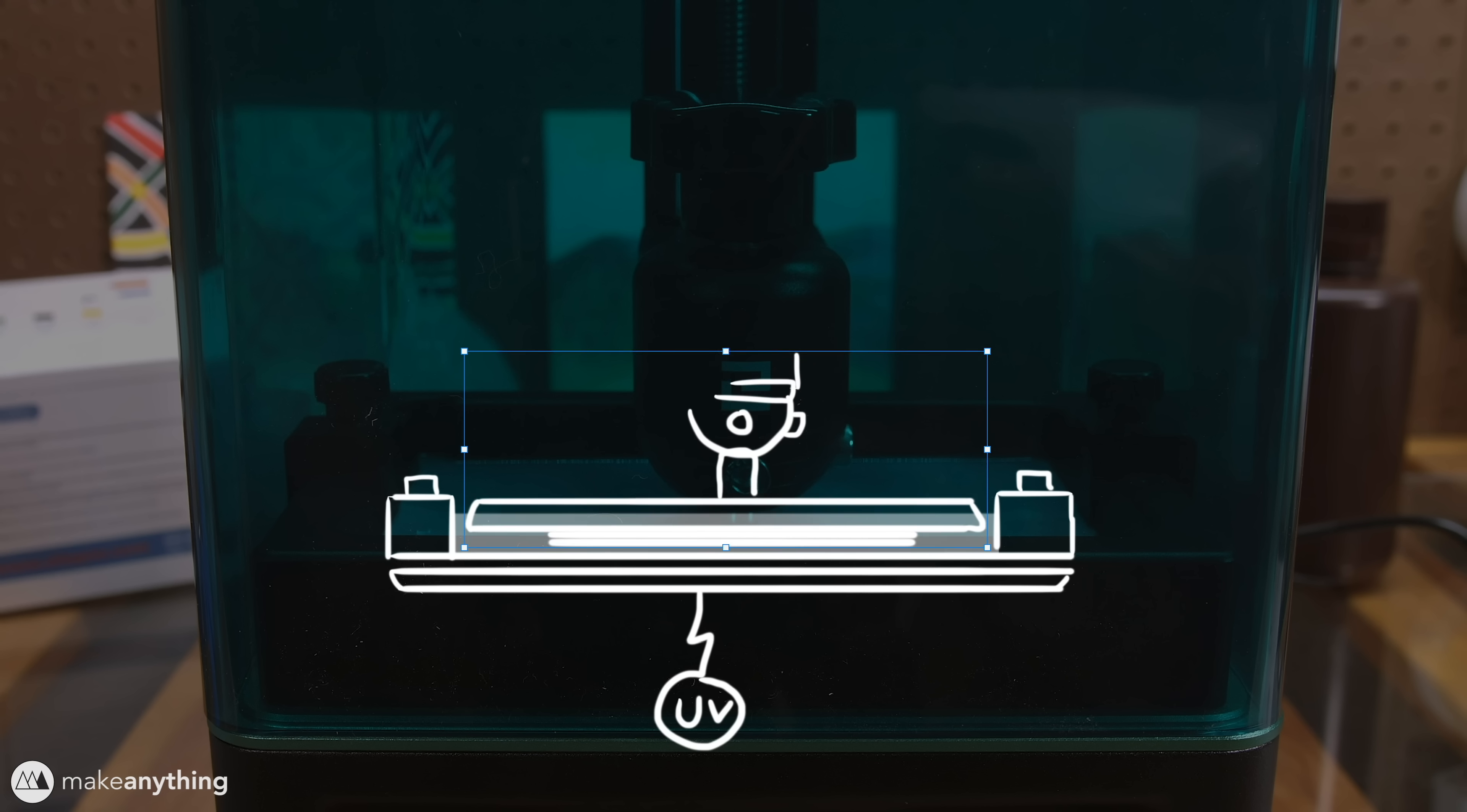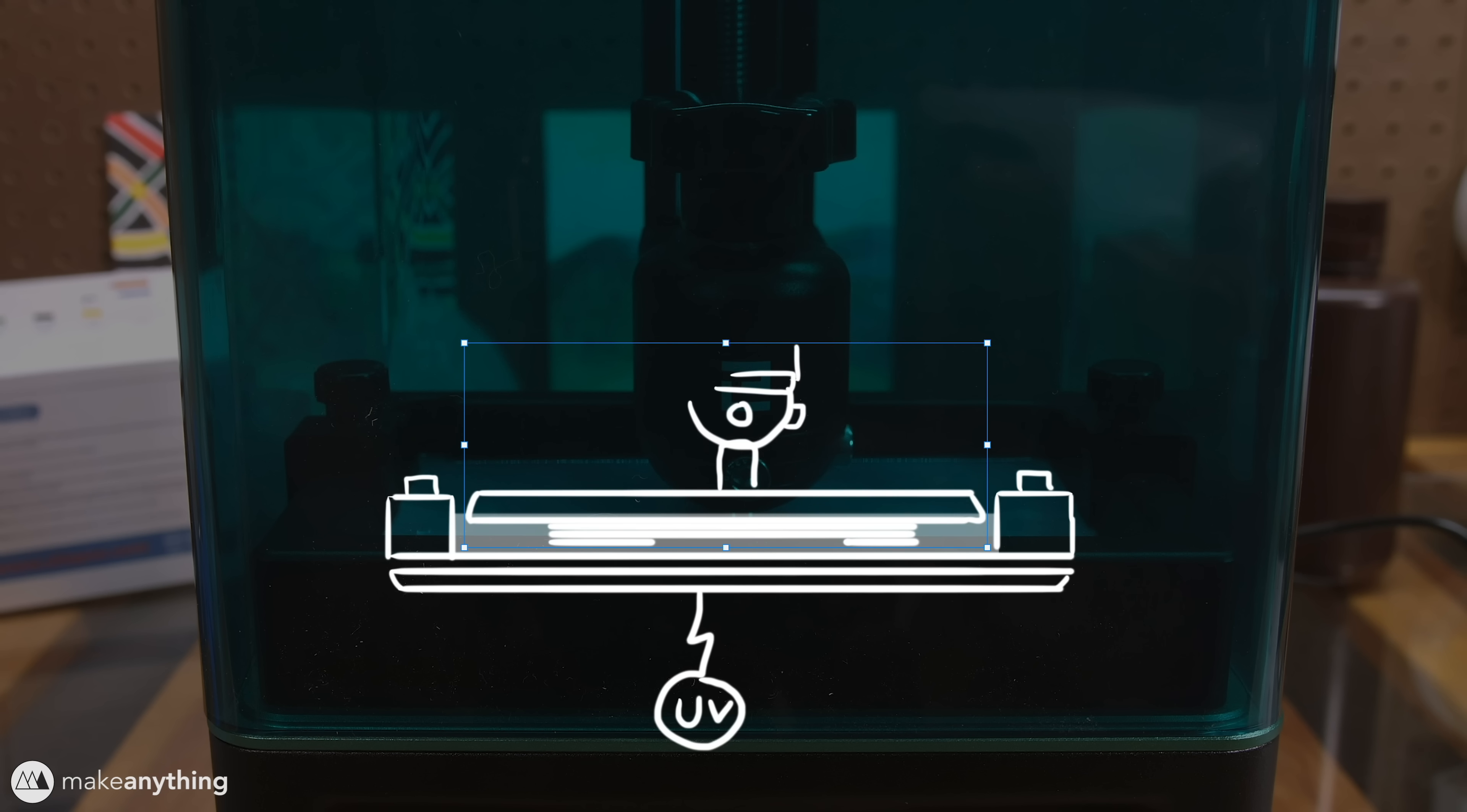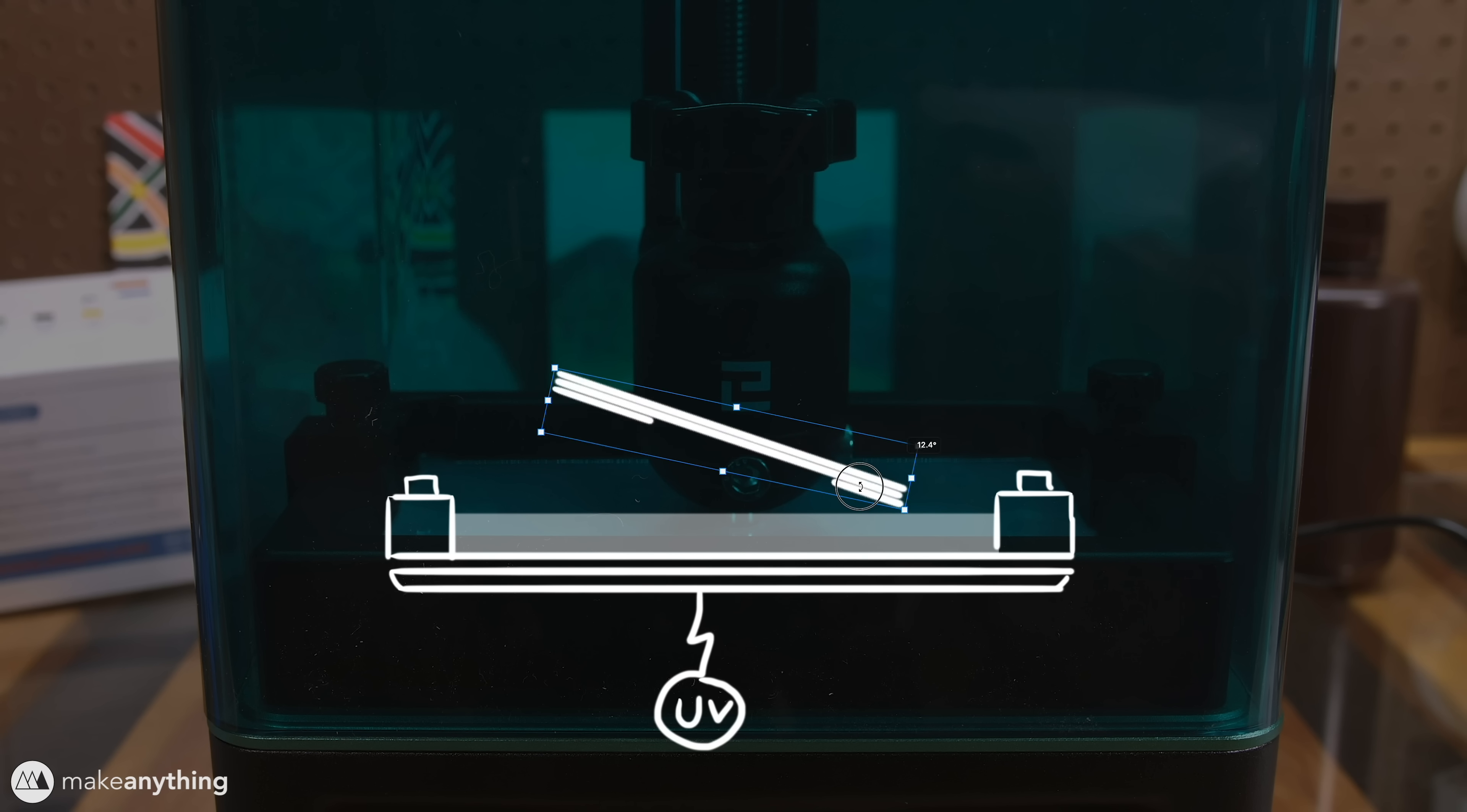Now the build plate will lower back into the vat but slightly further away from the bottom and that allows us to cure a new layer of resin on top of the first layer. Again we'll lift up the build plate to release that pressure, lower it back down and expose our third layer. That process will repeat over and over again curing one layer of resin at a time and that's basically how it can build up a very complicated 3D model. Once the model is fully constructed we can just pop it off of the build plate and there we have our resin printed part.